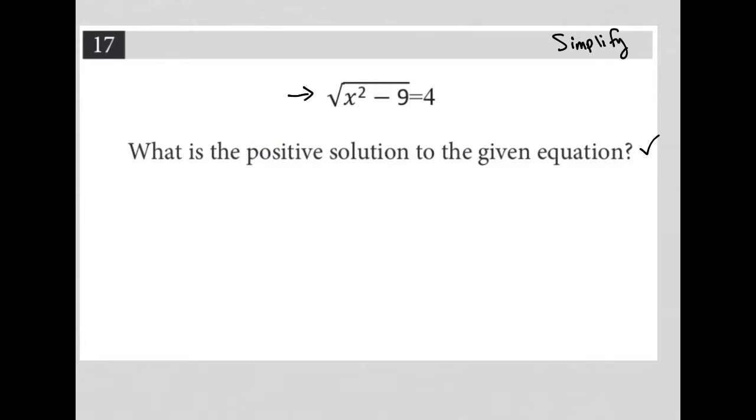The question says, what is the positive solution to the given equation? So I am going to take the equation that is given to me and I am going to simplify it by squaring both sides. That's how I get rid of the radical on the left-hand side, leaving me with just x squared minus 9 equals 16.